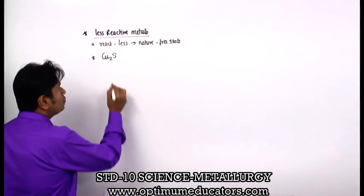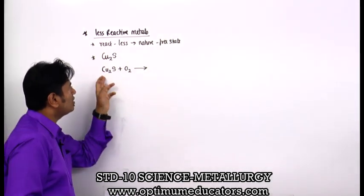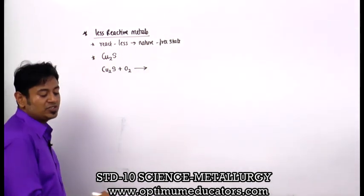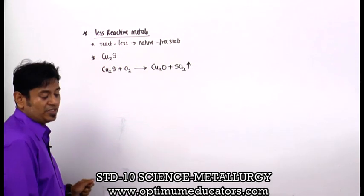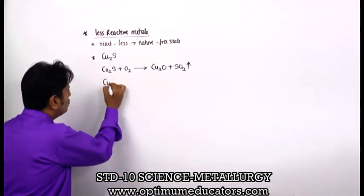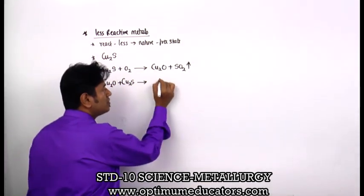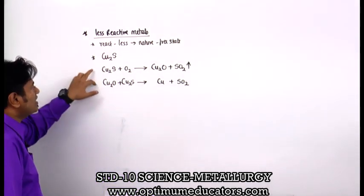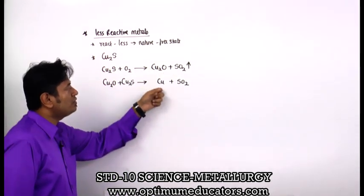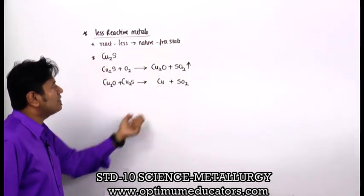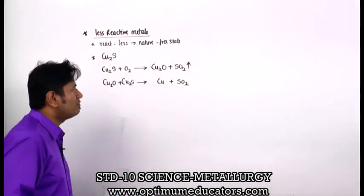For copper extraction: Cu2S is reacted with O2 to give Cu2O and SO2 gas. Then Cu2O is reacted again with Cu2S to give copper metal and SO2. So, first the ore is converted to oxide by reacting with O2, then that oxide is reacted with Cu2S again to get copper metal. The balanced equation: 2Cu2S + 3O2 → 2Cu2O + 2SO2, and 2Cu2O + Cu2S → 6Cu + SO2.